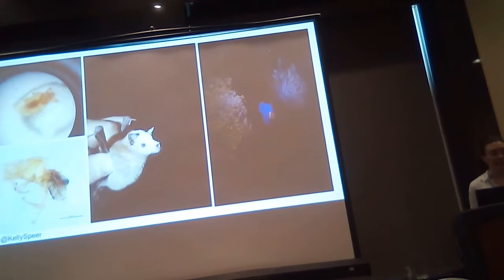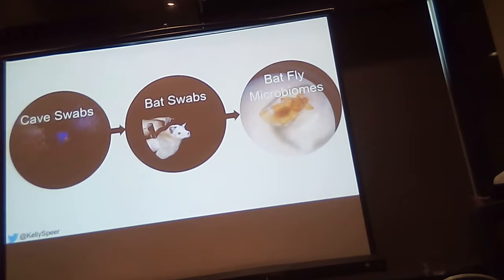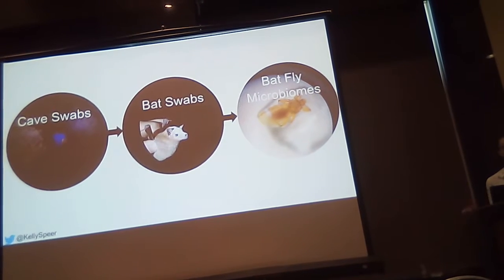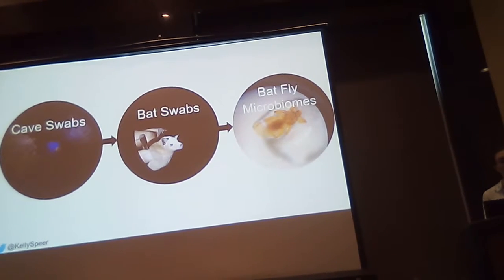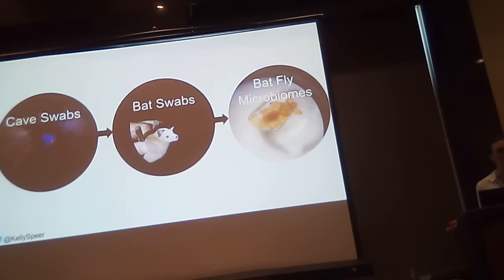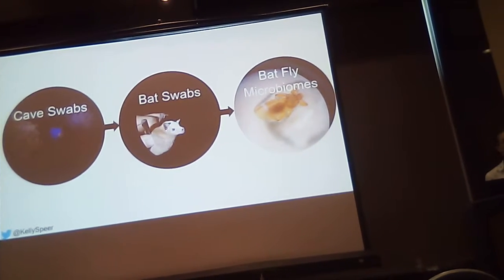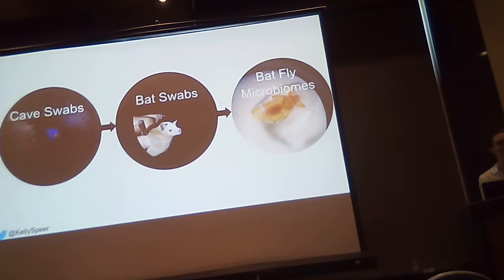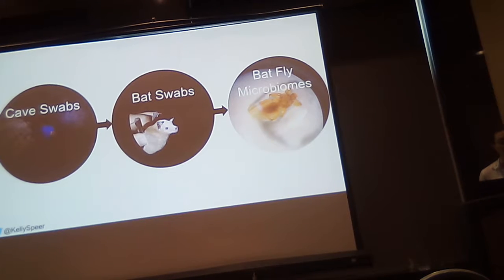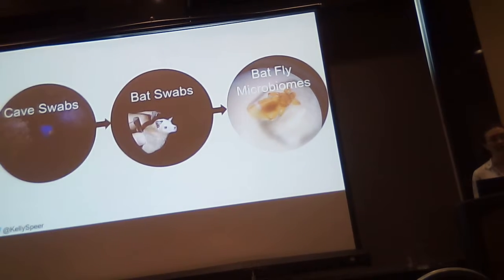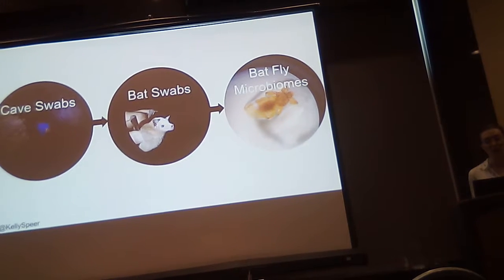These are generally cave-roosting bats. We can take advantage of the hierarchical nature of this system. Bat flies, as obligate ectoparasites that are host specialists, have a limited number of environments they interact with, dictated by the roost and the bat. So we can more easily account for the environmental sources of bacterial colonization of their microbiomes. I swabbed the caves, I swabbed the bats that bat flies occur on, and I took the gut and saliva internal microbiome of the bat flies.